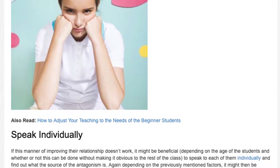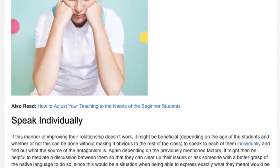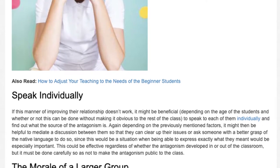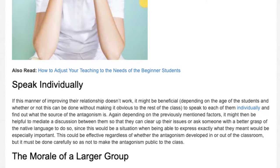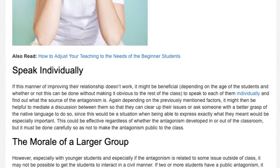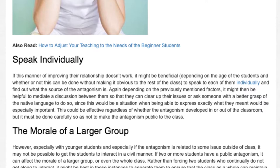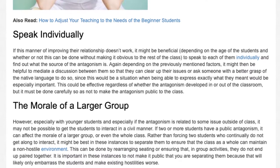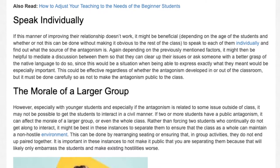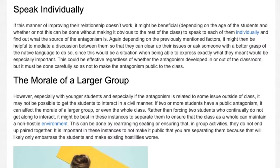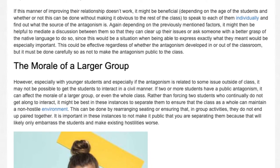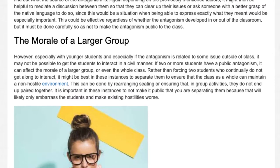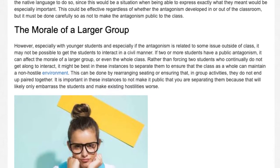If this manner of improving their relationship doesn't work, it might be beneficial, depending on the age of the students and whether or not this can be done without making it obvious to the rest of the class, to speak to each of them individually and find out what the source of the antagonism is. Depending on these factors, it might then be helpful to mediate a discussion between them so that they can clear up their issues, or ask someone with a better grasp of the native language to do so, since this would be a situation when being able to express exactly what they meant would be especially important. This could be effective regardless of whether the antagonism developed in or out of the classroom, but it must be done carefully so as not to make the antagonism public to the class.